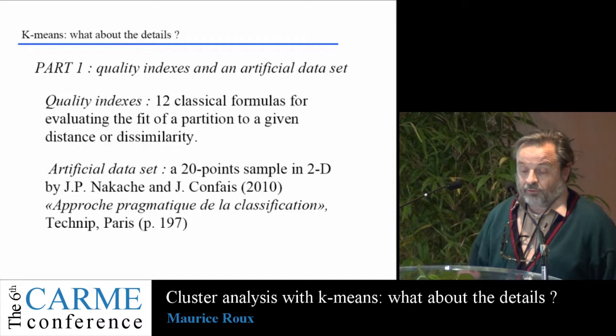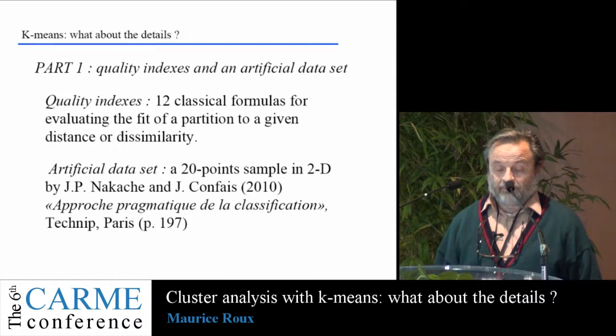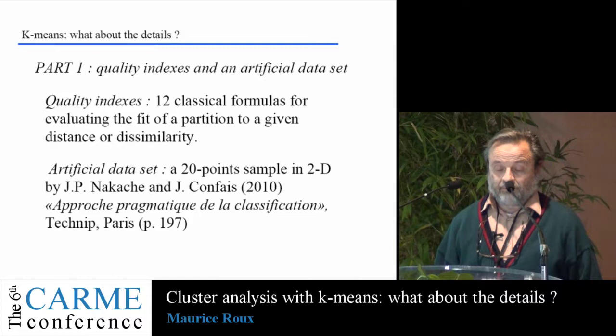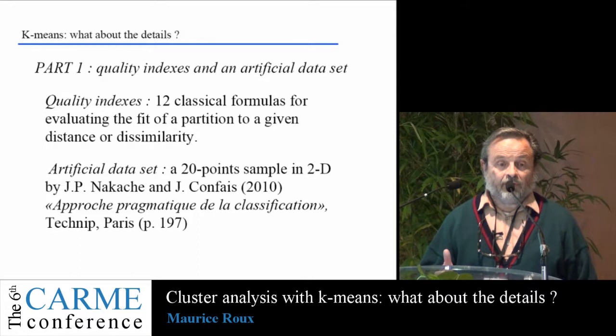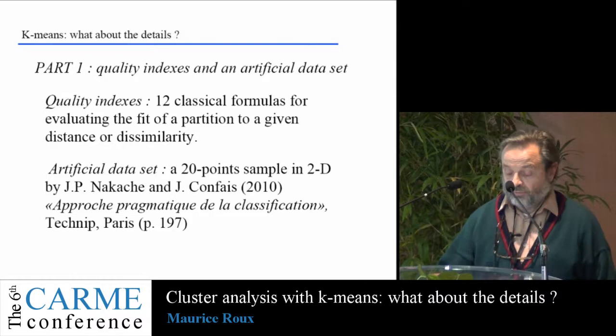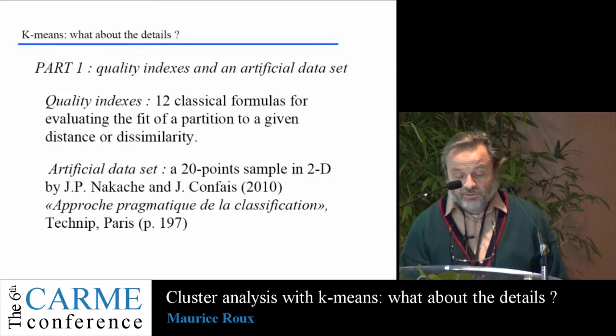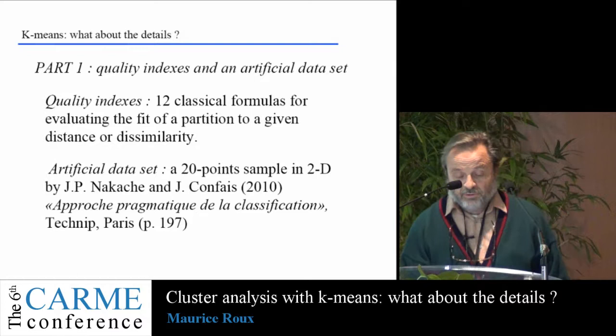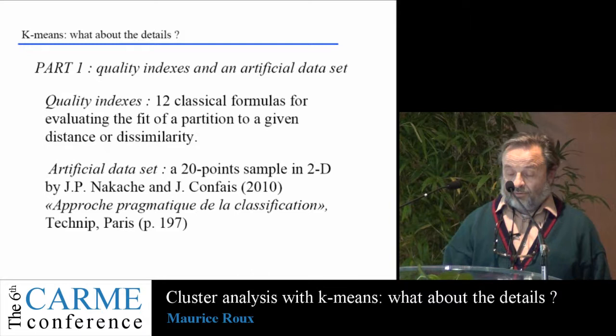In the first part, I will talk about 12 classical formulas for evaluating the fit of a partition to a given distance or dissimilarity. Because I am working with a real data set, the number K of clusters is not known, so we are constrained to use some formula of fitting between distance and dissimilarity. I will begin with an artificial data set due to my colleagues Nakash and Confe in their book, Approche Problematique de la Classification.